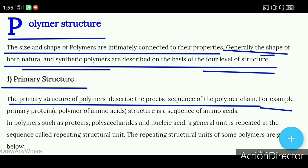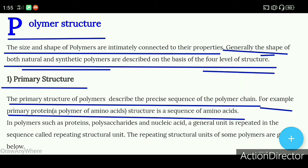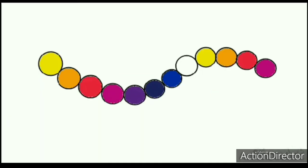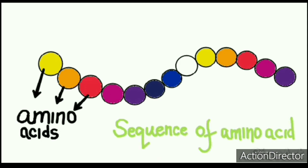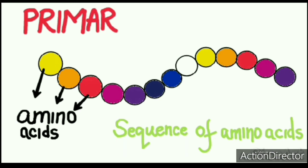For example, a polymer of amino acid structure is a sequence of amino acids — the protein is a polymer of amino acids. The primary structure of the protein tells us what type of amino acid is present.